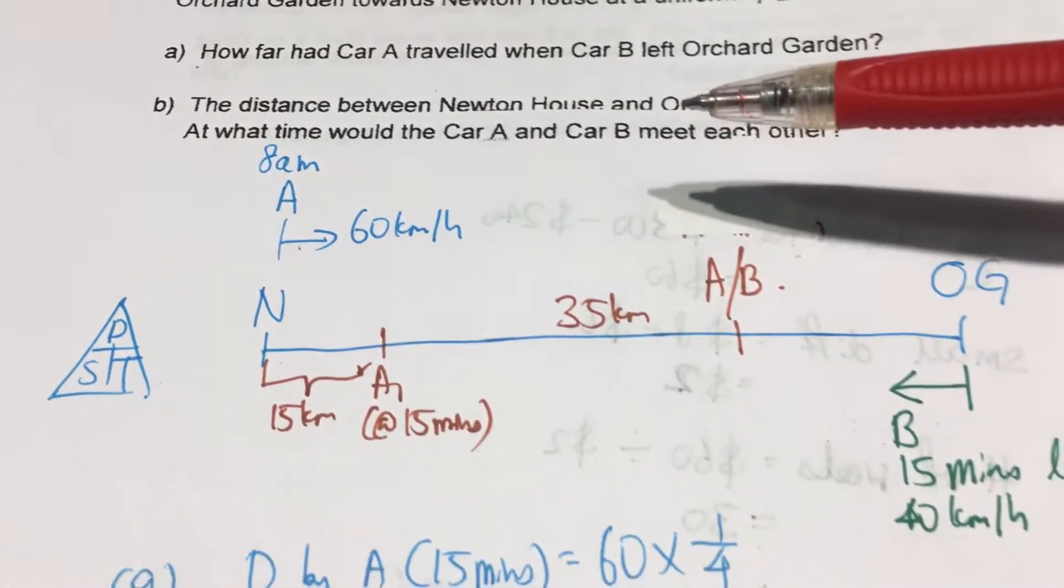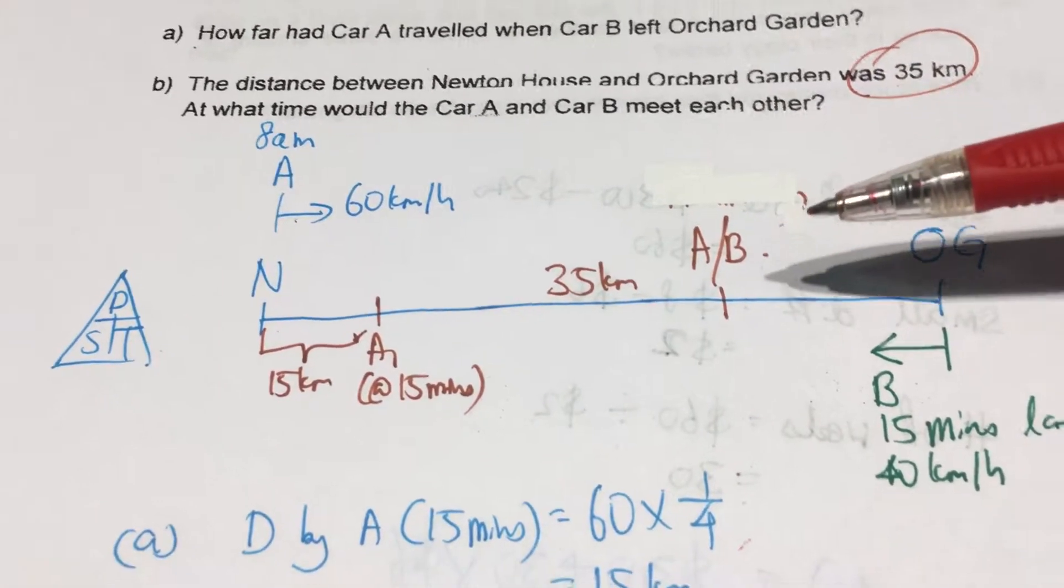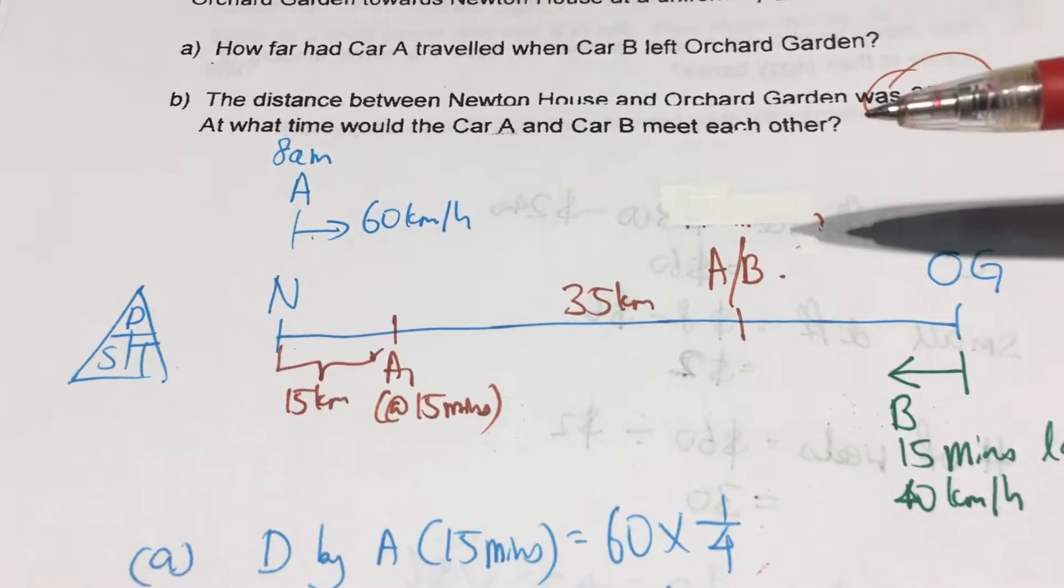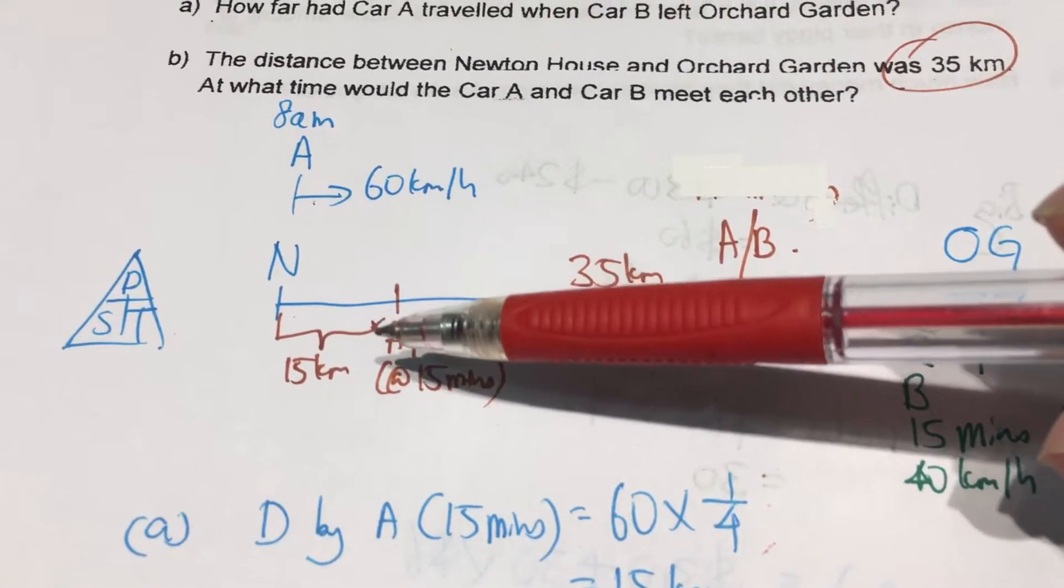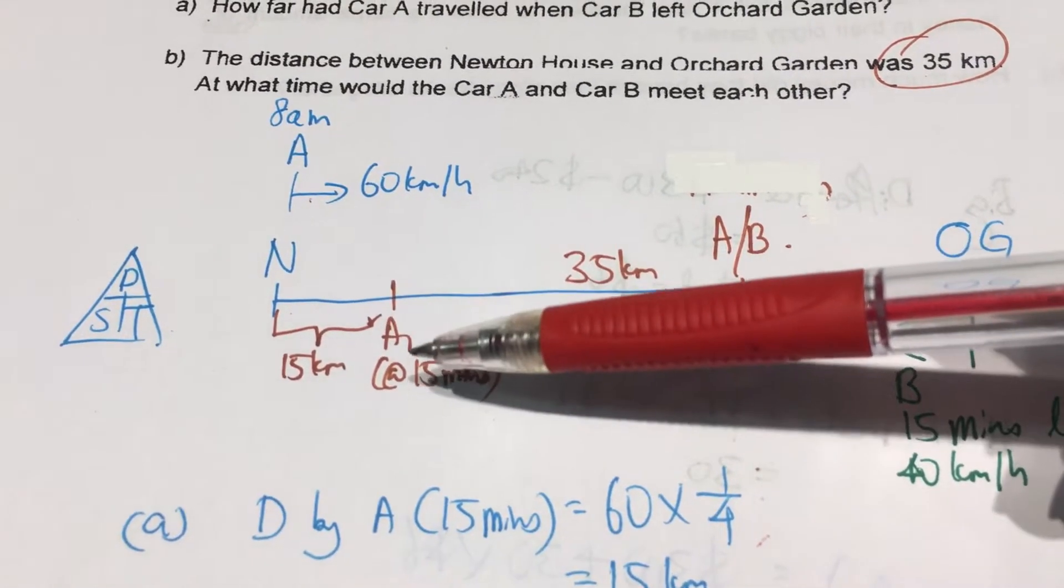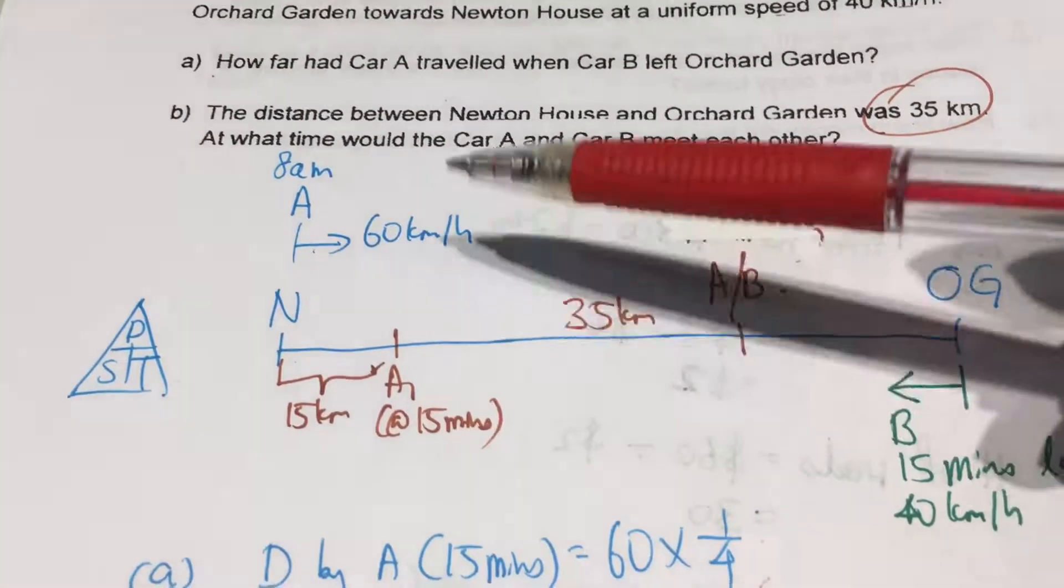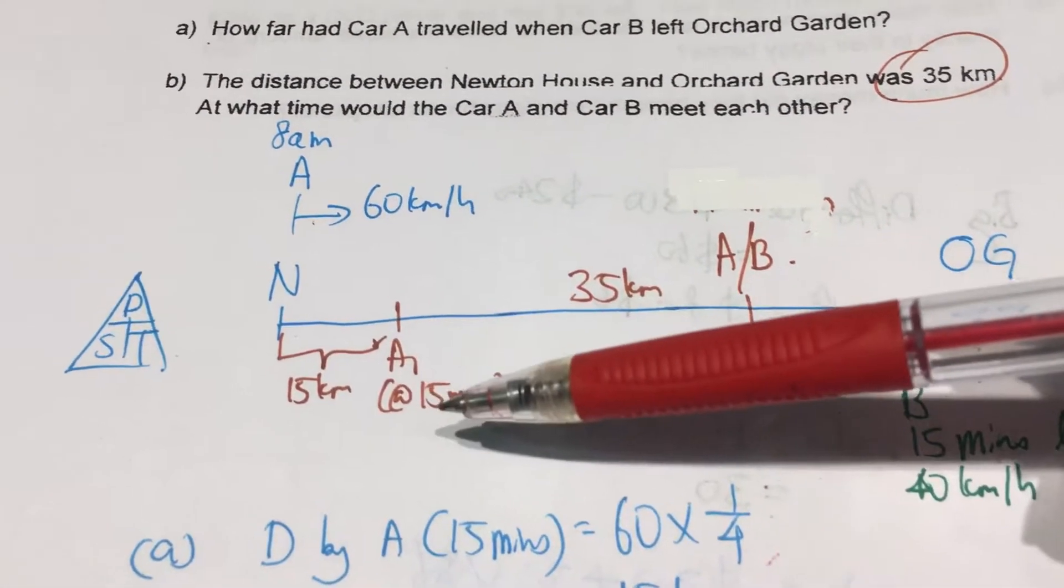At what time would car A and B meet each other? So, meaning that we need to start off from this point because it's actually the point where car A has already traveled 15km.